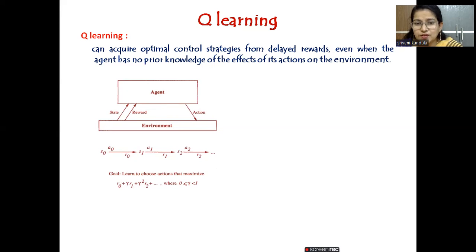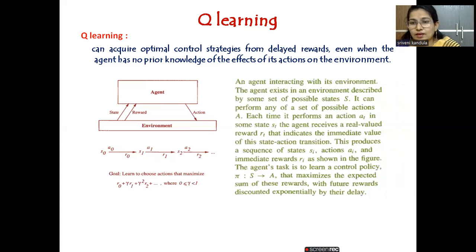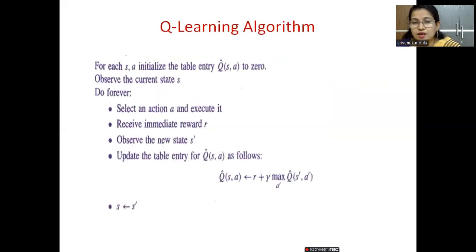The reward starts with r₀ (the current reward) plus future reward gamma times r₁, where gamma ranges between 0 and 1. Gamma is used as a penalty factor. You can see gamma, gamma squared — if the reward is negative, the cumulative reward will be reducing exponentially. So the agent has to be very careful that he is not receiving negative rewards; he should always receive a positive reward.